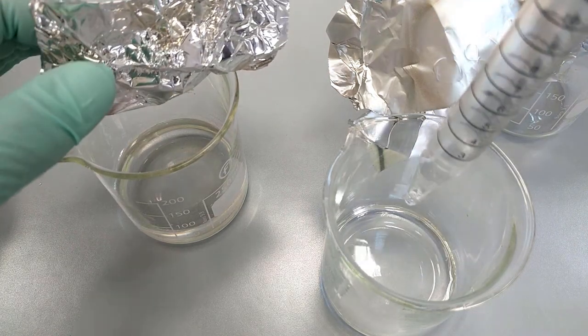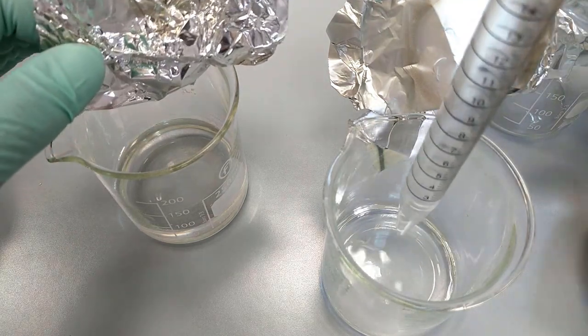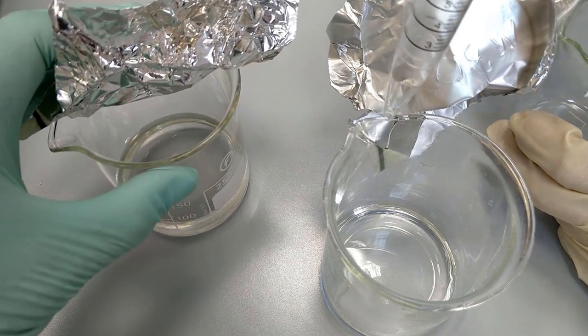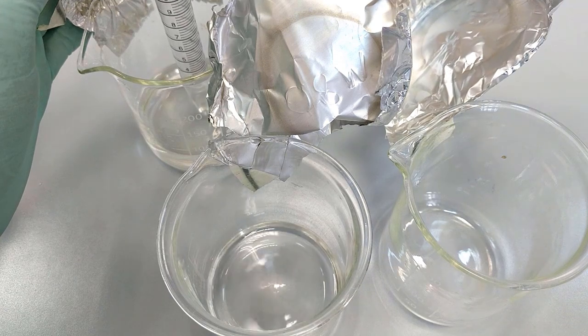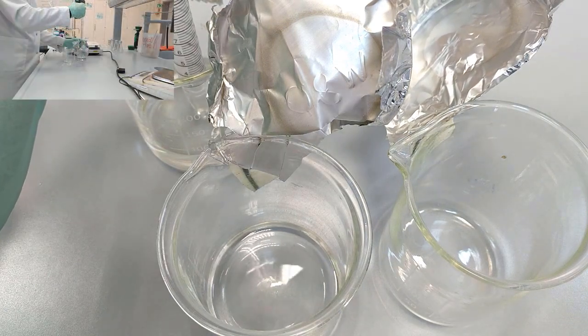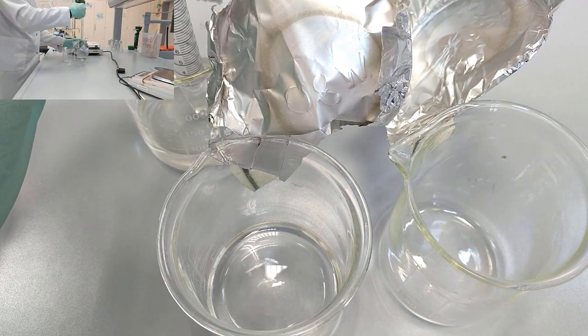To prepare the 0.4 molar concentrated solution, you are going to take 20 ml of the 1.2 molar concentrated glucose and transfer it to the second beaker.